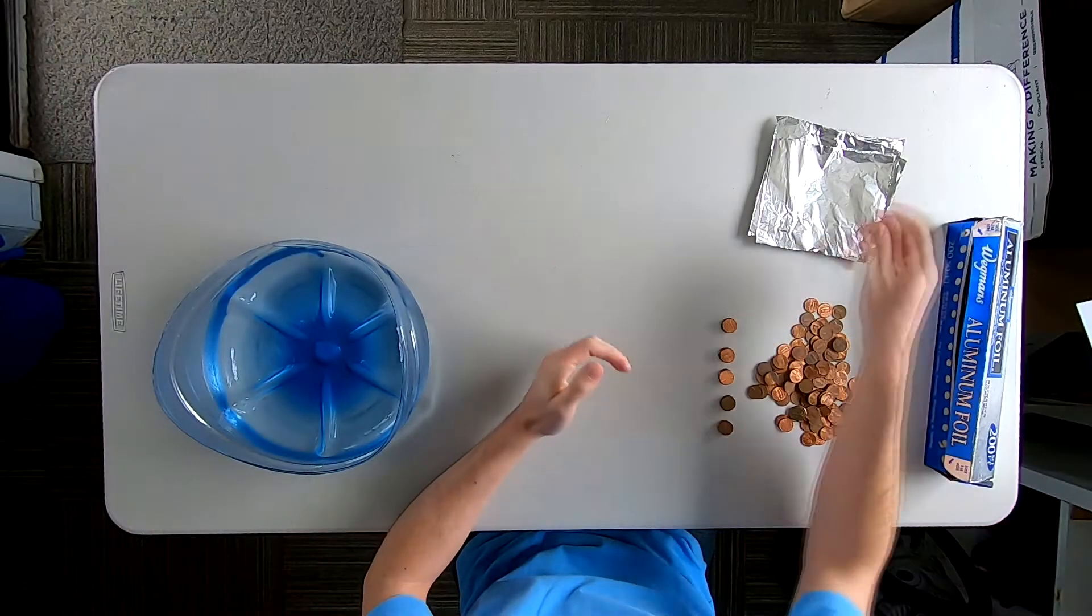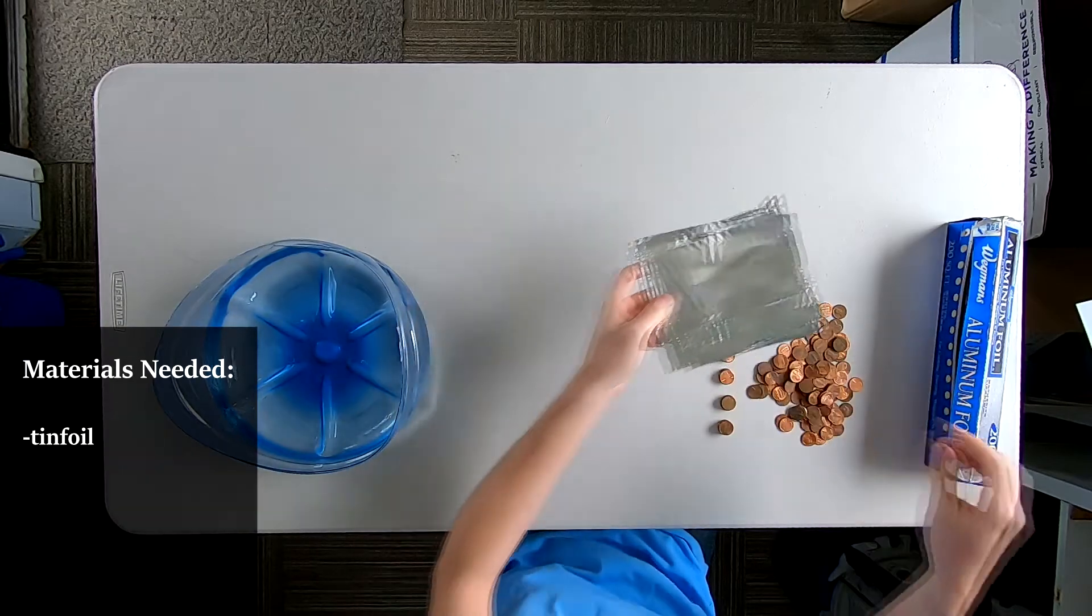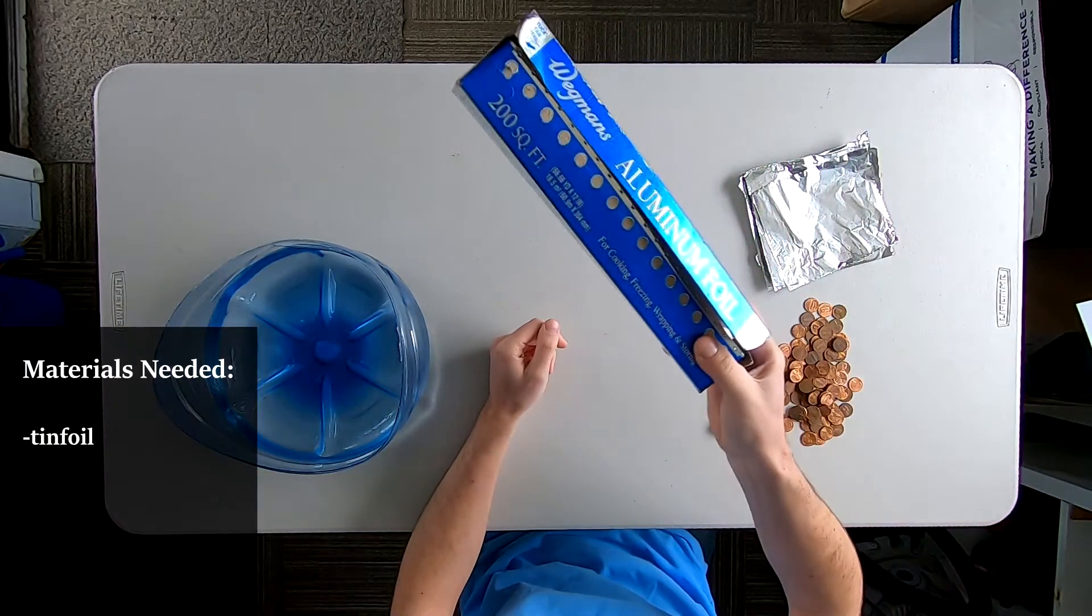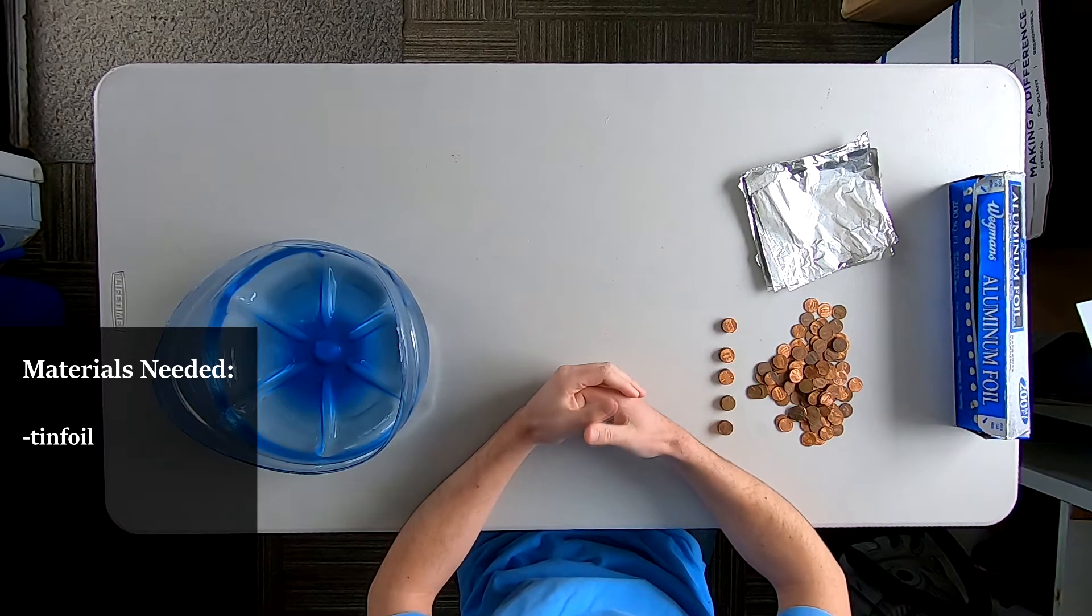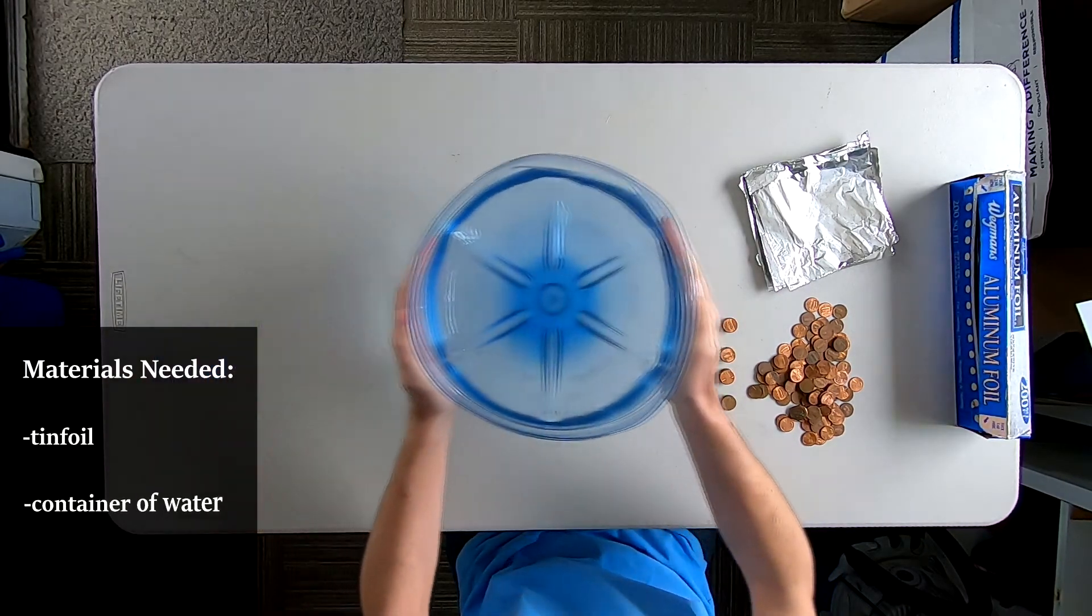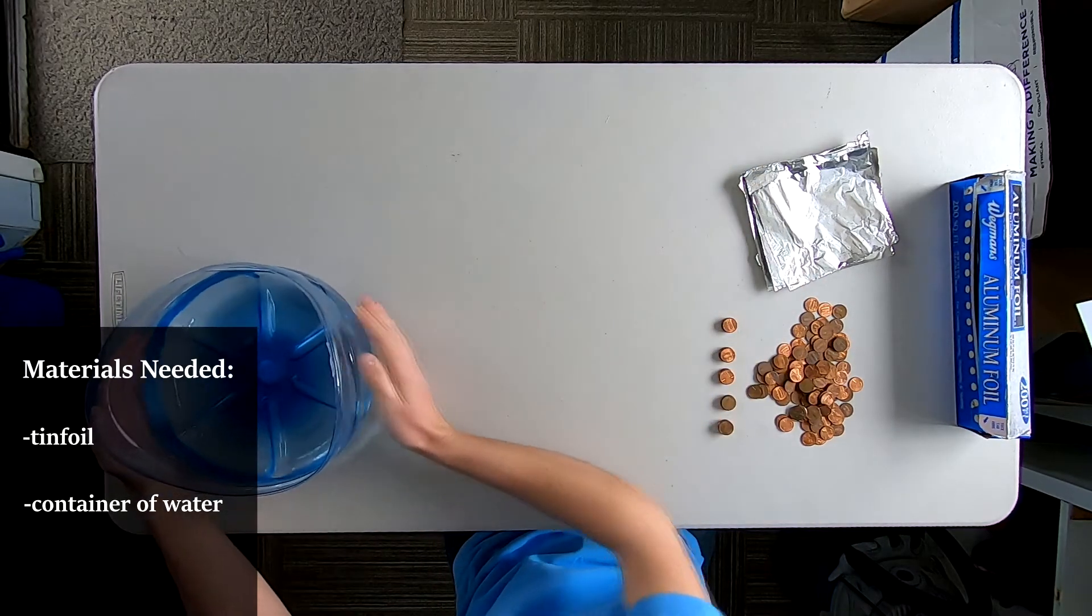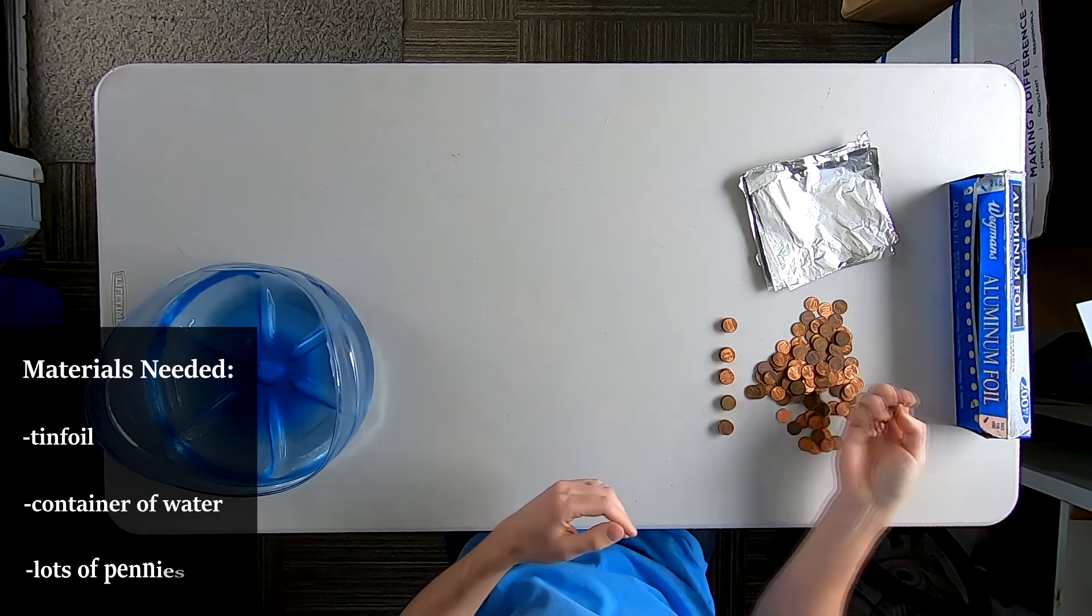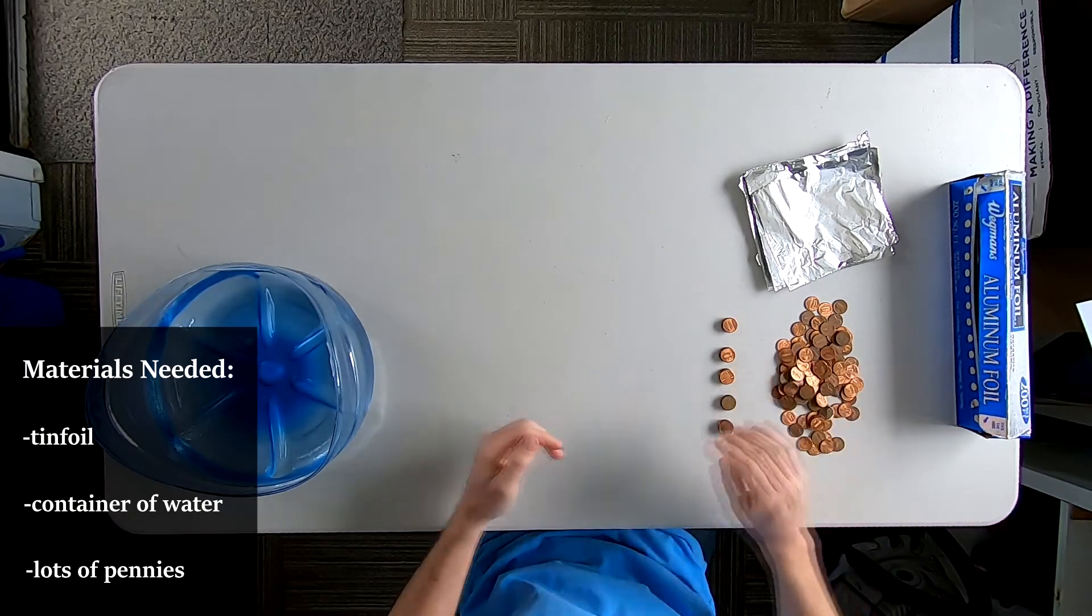You need a few different materials for this experiment. The first is tinfoil. I've cut it into six inch squares. Just use any tinfoil. If you have a large container, you can do larger squares. You need a container of water for the boat to float. A bunch of pennies to weigh down the boat to see how buoyant it is.